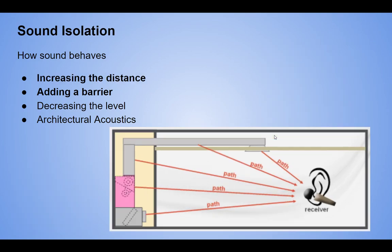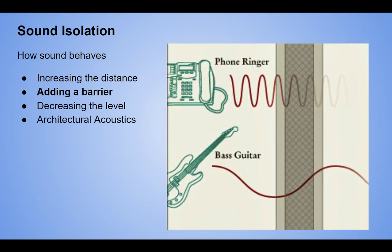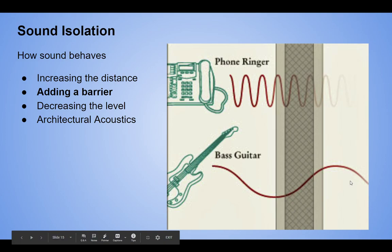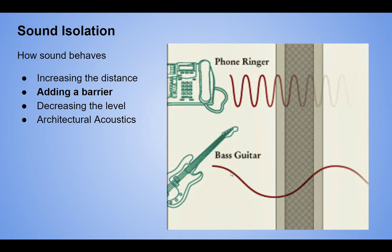Increasing distance and adding a barrier are the most efficient ways. When adding a barrier, know what you're trying to block. A single number descriptor like STC is kind of misleading — this wall might be STC 40 but you can see in the illustration the sound is getting through at certain frequencies. It's not that the bass guitar is louder, it's that it's a different frequency and that wall basically doesn't see it — it's like it's not there.